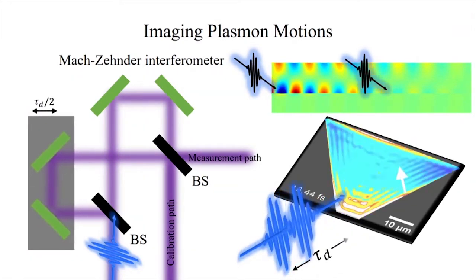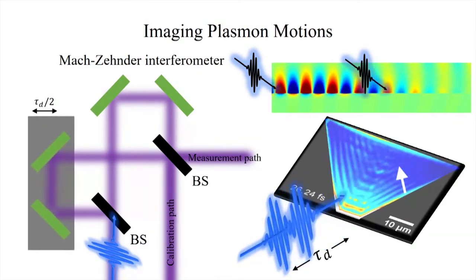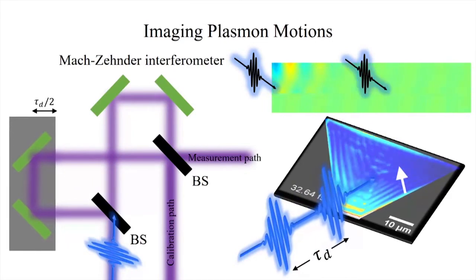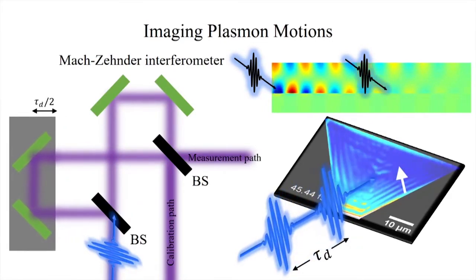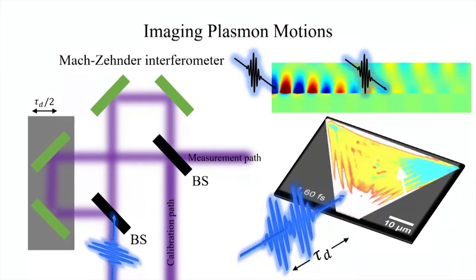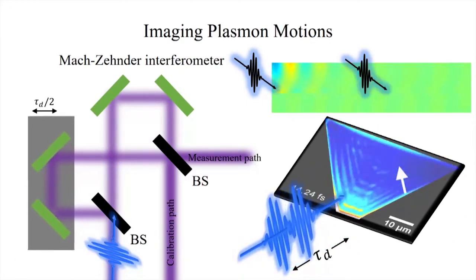With two pulses, we can use the first pulse to excite a surface plasmon polariton, and the second delayed pulse to create the interference pattern. This interference pattern then moves in space as we change the time delay between the pump and probe beams because the regions of constructive and destructive interference depend on their relative delay.